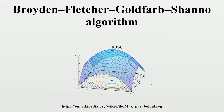The approximate Hessian at stage k is updated by the addition of two matrices. Both Uk and Vk are symmetric rank-1 matrices but have different bases. Uk and Vk construct a rank-2 update matrix which is robust against the scale problem often suffered in gradient descent searching. The quasi-Newton condition imposed on this update is part of the algorithm.